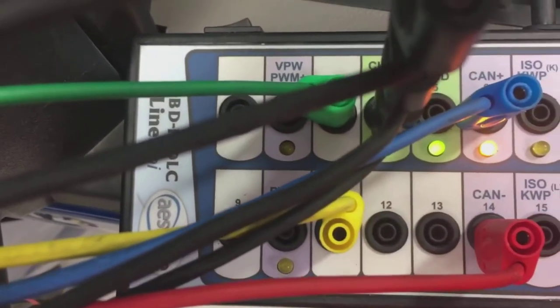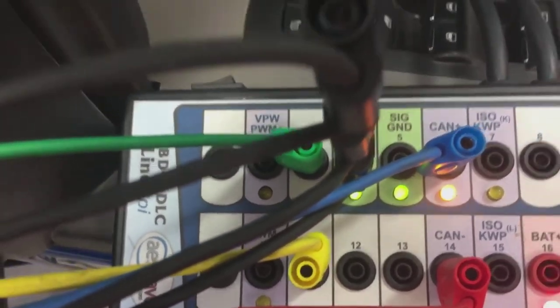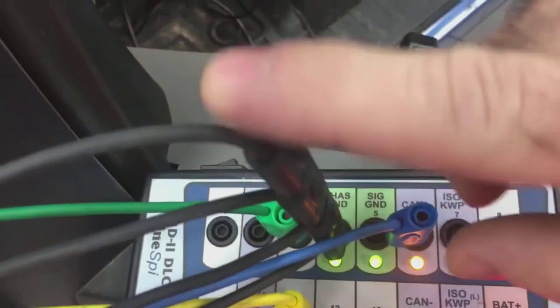And the grounds are on the chassis ground there. This just has a breakout from the DLC up to the box, and then it also has this pigtail here you can hook the scan tool in there.